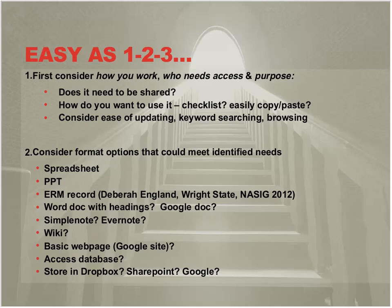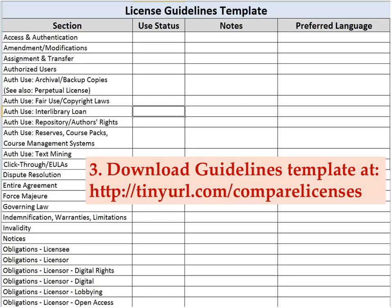After you've thought about this, I recommend going to my website — I have a tiny URL on the screen — where I've created a license guidelines template for you to download. It's in an Excel spreadsheet, and you can convert it later. On the left-hand side I've listed the sections you commonly find in licenses, which are also sections where you might want customized language for your institution. That gives you a good sense of what you might need to create in terms of customized language.